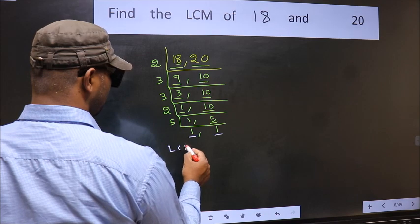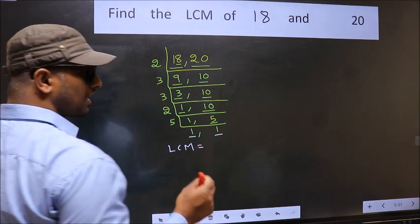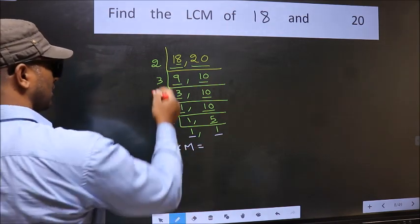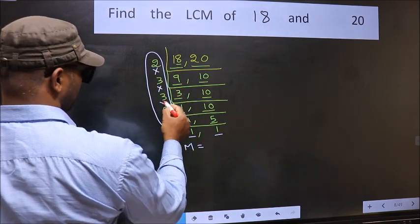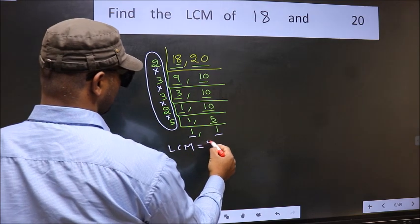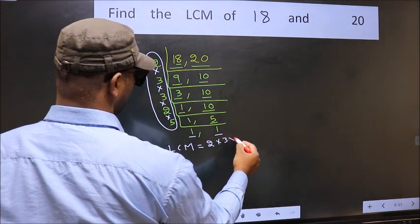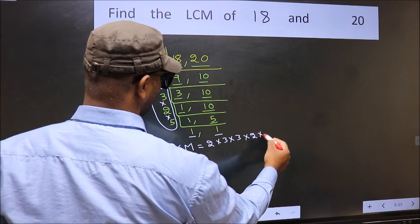So our LCM is the product of these numbers. That is 2 into 3 into 3 into 2 into 5.